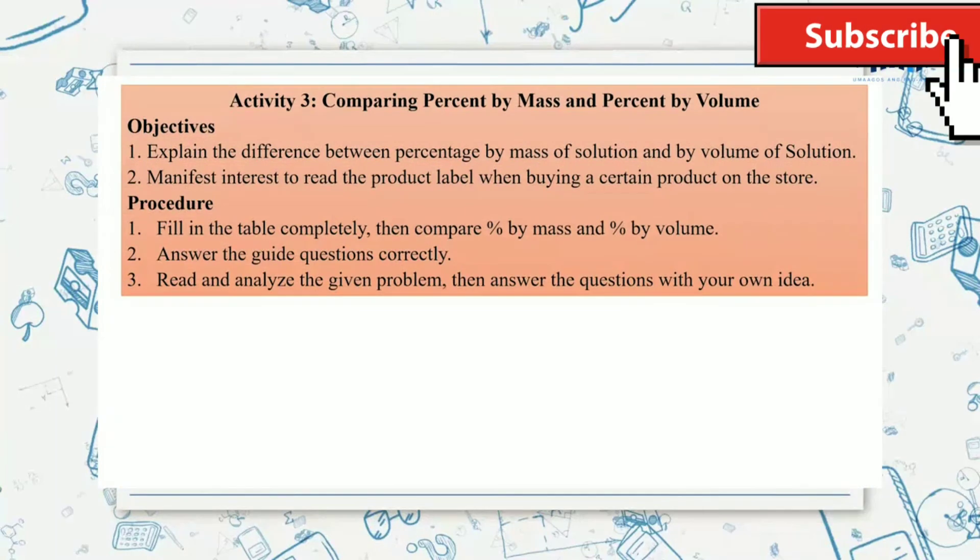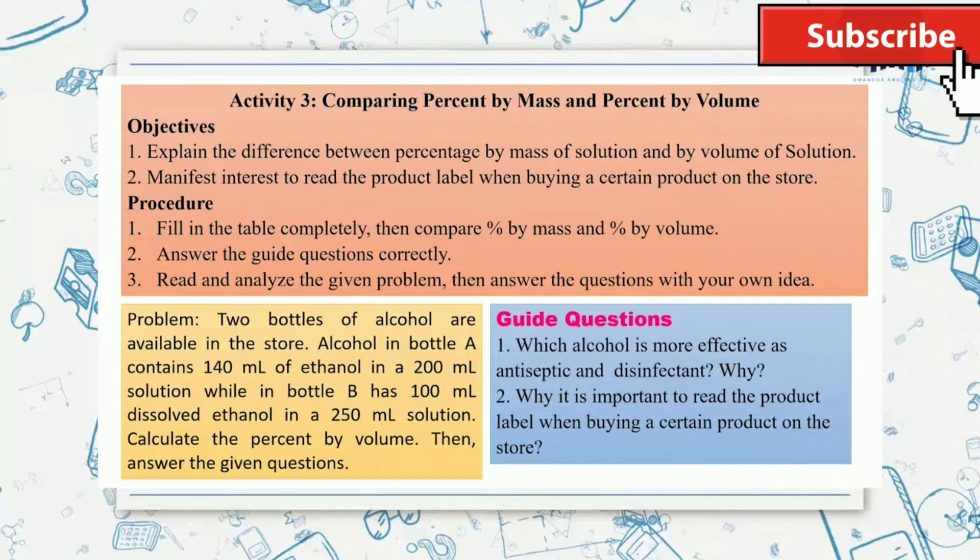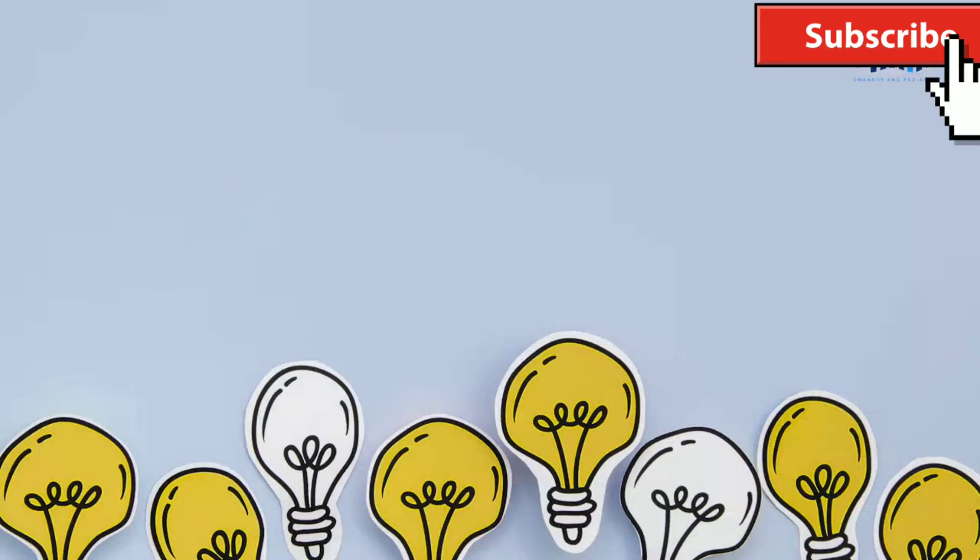Bring out your activity number 3: Comparing percent by mass and percent by volume. You have here the objectives, the procedure, and take a look with this problem and these two special guide questions. This time, let us sum up the content of our lesson.